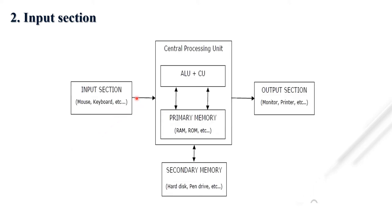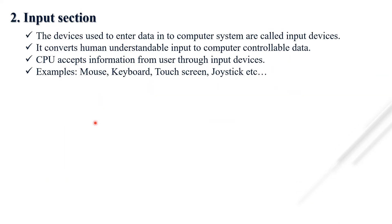The next component is the input section. Devices used to enter data into the computer system are called input devices. They convert human-understandable input into computer-controllable data. The CPU accepts information from the user through input devices such as mouse, keyboard, touch screen, joystick, microphone, and scanner.